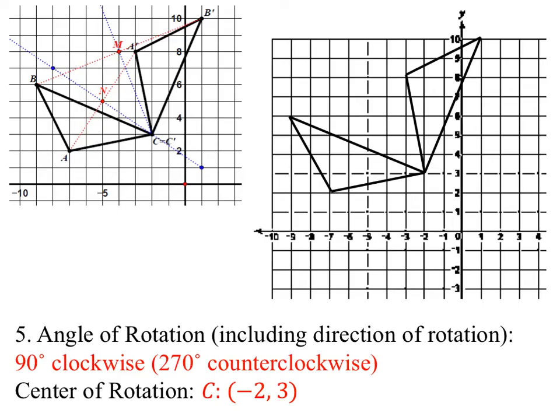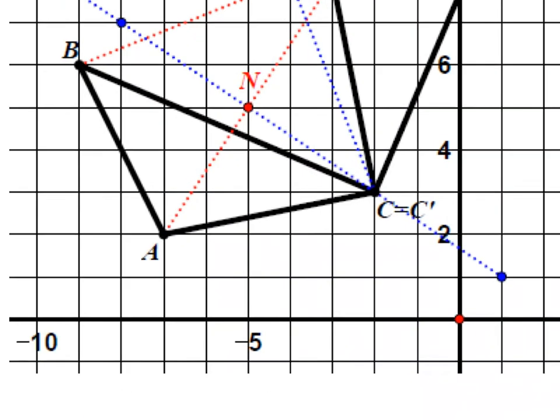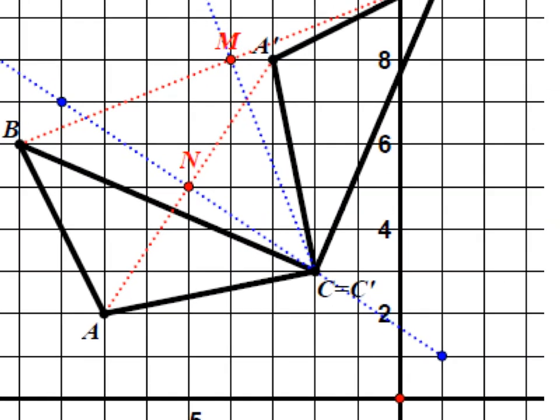Another way to confirm the center of rotation: if C and C prime are on the same point, since they're equidistant from each other, that point is also the center of rotation. Using slopes, we can confirm this is a 90-degree clockwise rotation.